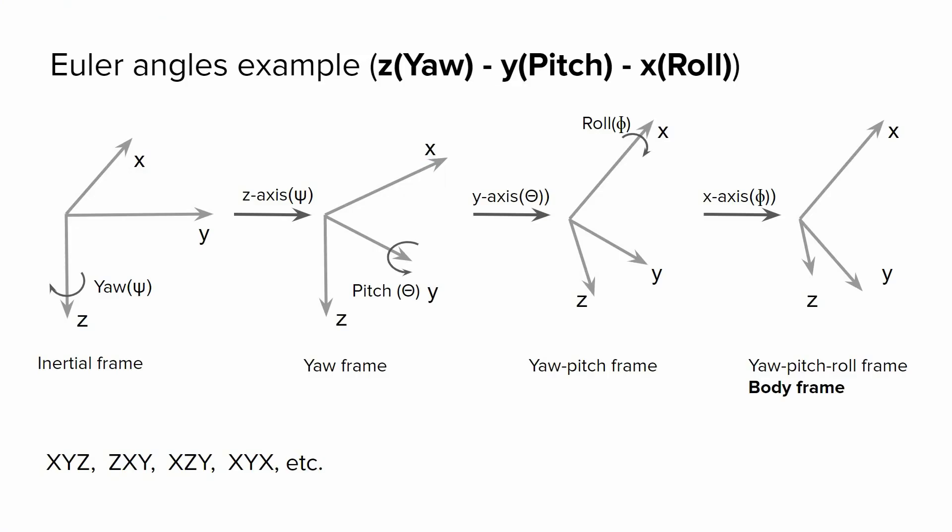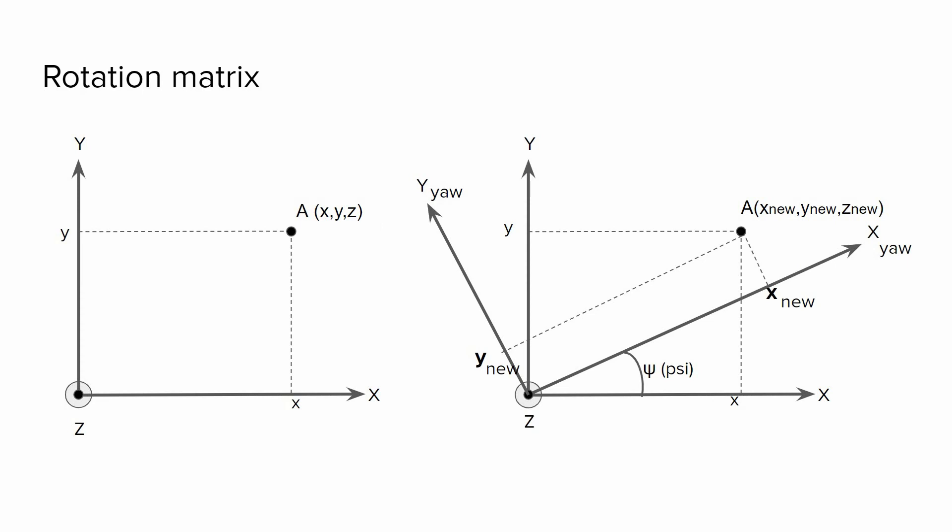The next step is to mathematically model all these rotations, and we can do that using the rotation matrix. And for that purpose, let's consider a problem. Imagine that we have a point A, and it has the following coordinate X, Y, and Z with respect to the inertial frame.